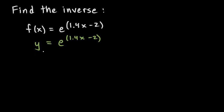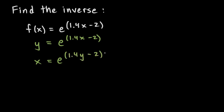Then we switch the x and the y — wherever there is a y, write an x; wherever there's an x, write a y. That gives us x equals e to the power of 1.4y minus 2.